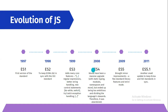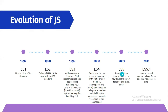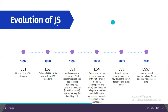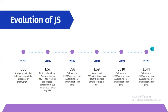Then they released ECMAScript 4, which added many features. After that they released ECMAScript 5, which was a more stable version - they skipped some features from ECMAScript 4. Then ECMAScript 5.1 was released in 2011. Until that time this language was not very stable and not that popular - they were using it just as a scripting language.